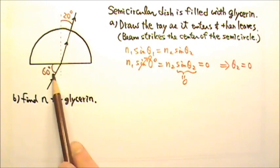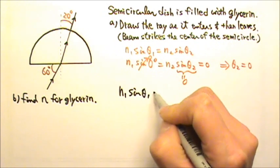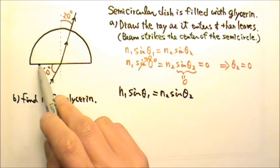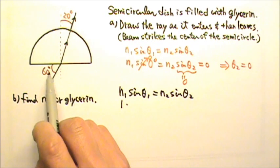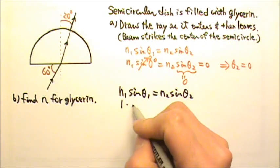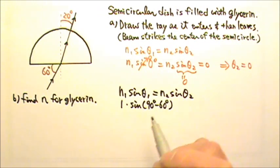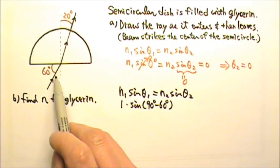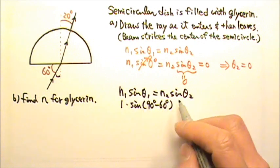So we can use this refraction to find the N. So we have N1 sine theta 1 equals N2 sine theta 2. N1 is air, so it's 1. Sine theta 1 is not 60 degrees, but 30 degrees. It's 90 degrees minus 60 degrees, because we want the angle between the ray and the normal line. So it's this angle right here, not that one. So we need the 30 degrees.